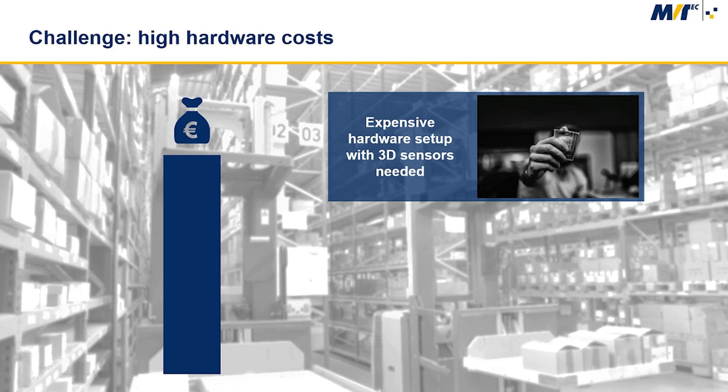A mobile robot was equipped with a camera, taking images while passing by the shelf. The initial solution with the traditional approach used multiple 3D sensors to scan the content of the shelf, and therefore the hardware setup was quite expensive.